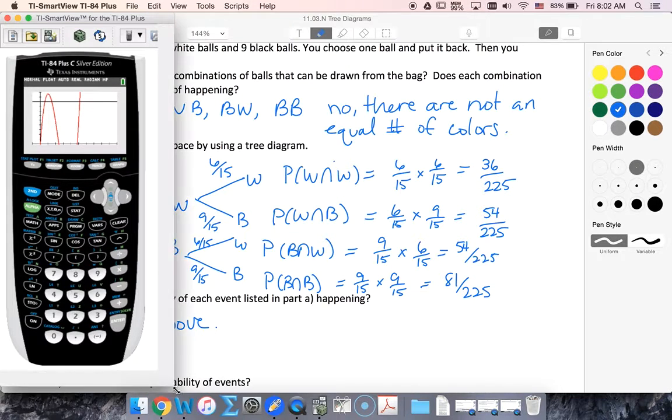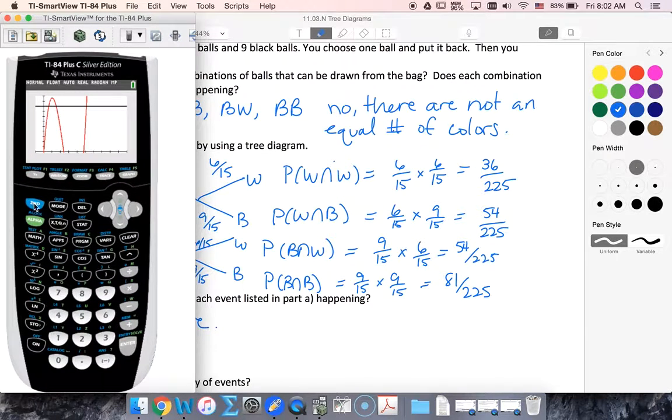Alright, so I'm gonna take this, make it just slightly bigger. Alright, so I'm gonna add up all my probabilities. So we have thirty-six out of two twenty-five plus fifty-four out of two twenty-five plus fifty-four out of two twenty-five plus eighty-one out of two twenty-five.